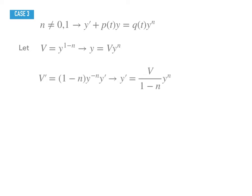And then you can solve for y prime in terms of v. So y prime would be equals to v prime over 1 minus n times y to the n. And then you replace y prime and y by v prime and v accordingly. So by replacing y prime by v prime and y by v, you will get this equation here.